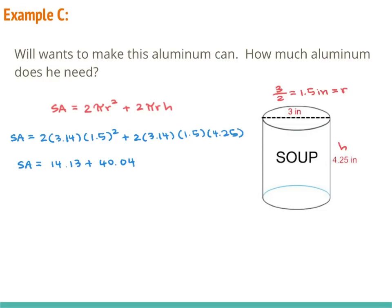And now I can add. So surface area is equal to 54.17, and our unit is inches squared.